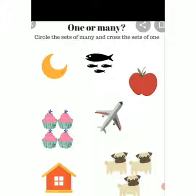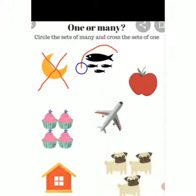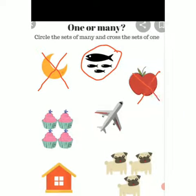Solve with me. Circle the sets of many and cross the sets of one. The moon — one or many? One. Toh kya bola hai? One ko cross karna hai. Cross the sets of one — so cross. Next is fish. Fish more than one — so circle this one. Third picture is apple — eki hai na? Toh usse cross karna hai. Cross.